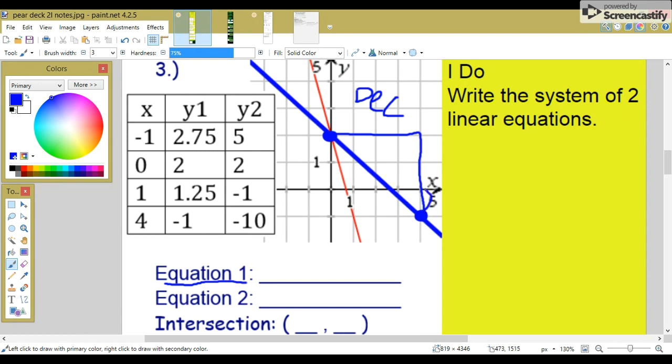It rises one, two, three, and it runs one, two, three, four. So our first slope m1 is negative three over four. And our b is plus two. Now let's find our equation, y equals mx plus b. Y equals negative three-fourths x plus two.